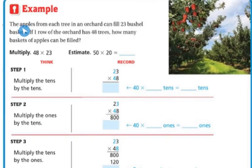All right, next example. The apples from each tree in an orchard can fill 23 bushel baskets. If one row of the orchard has 48 trees, how many baskets of apples can be filled? All right, step 1 says to multiply the tens by the tens. So I've got 2 tens and 4 tens. So I've got 2 tens times the 4 tens, which is 80 tens, because 4 times 2 is 8 with my zero. So I've got 80 tens, which is 800.